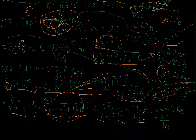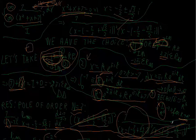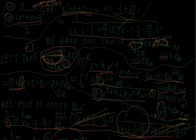This is our residue. Multiplying by −2πi gives the final answer: 4π / (3√3).